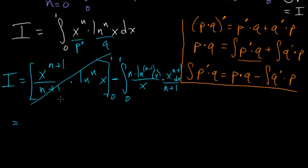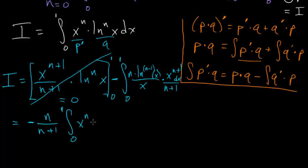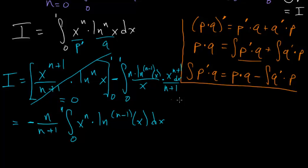Since the boundary term is 0, it goes away entirely. We have a minus sign and we can pull out the n and the (n+1), giving minus n/(n+1) multiplied by the integral from 0 to 1 of x^n times ln^(n-1)(x) dx. Notice that each application of integration by parts reduces the exponent on the natural log by 1, so let's apply it again.